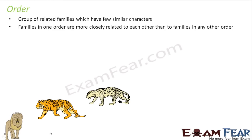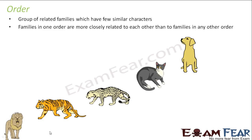Let us look at an example to understand this. We will follow the same example so that it becomes easier for you to compare and understand. These three all belong to the same genus, and when you compare a cat, they all belong to the same family. Now if you compare it with a dog, appearance-wise there is no similarity that you see between a dog and a tiger or a cat.